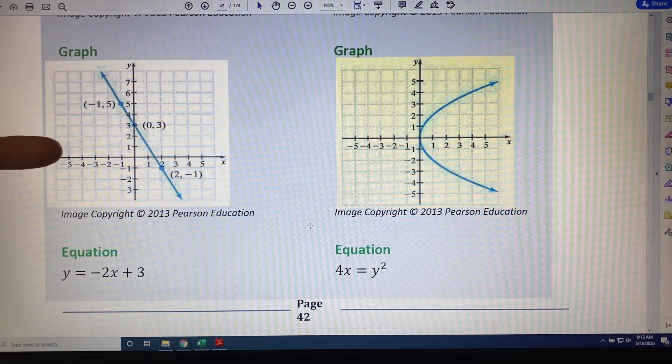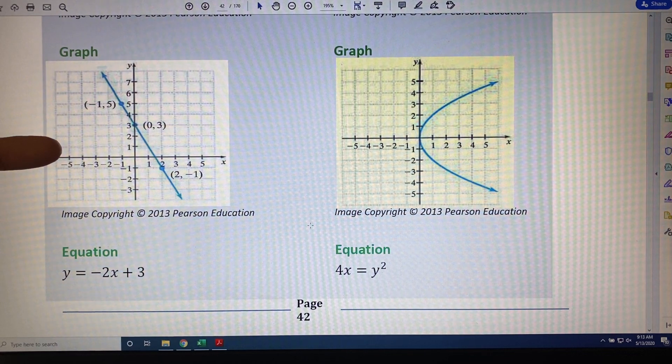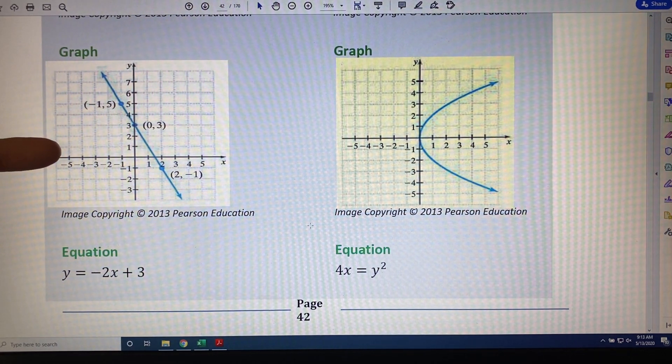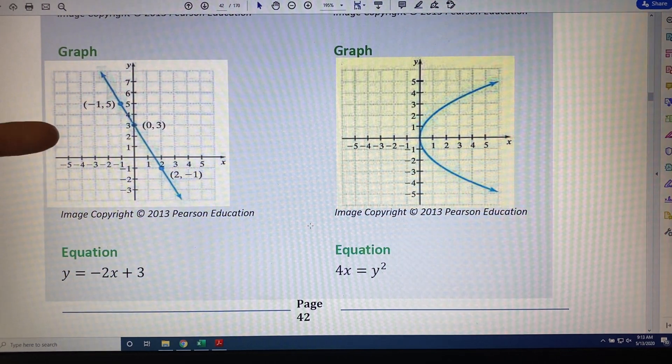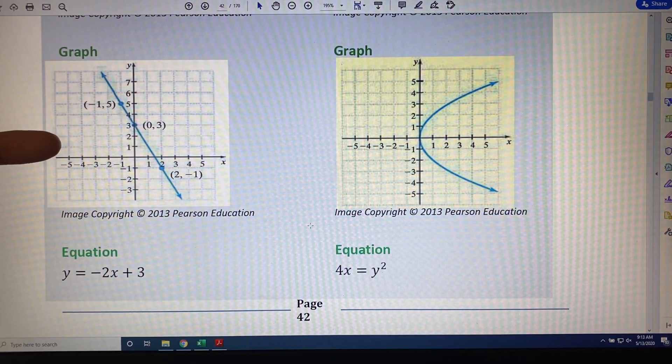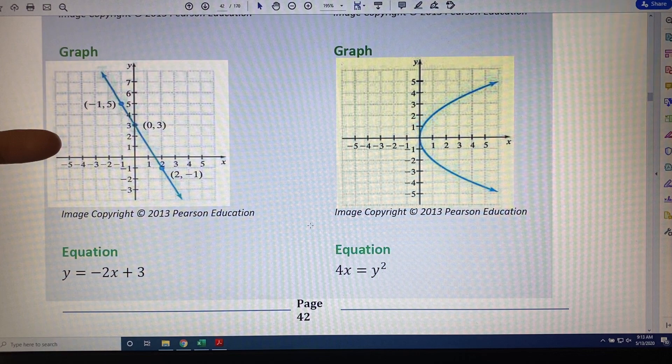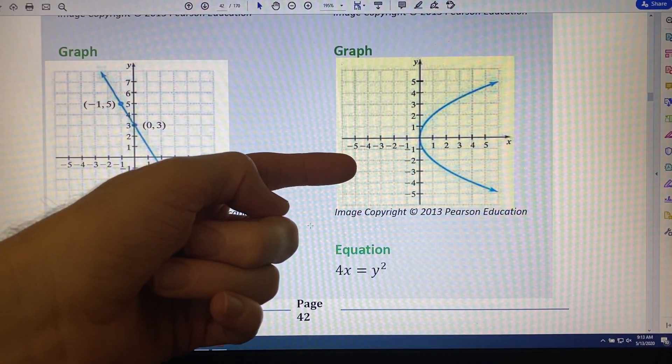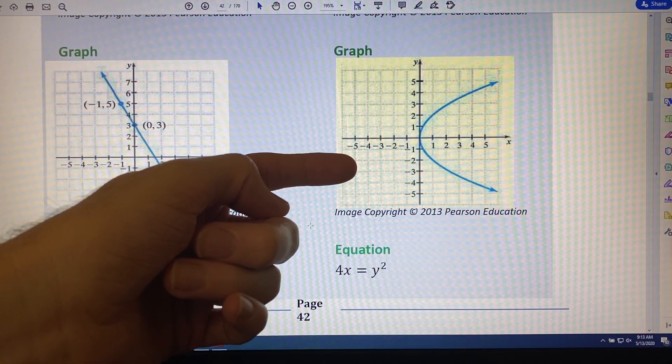Now, as to whether this is a function or not, there's a skill that I need to teach you called the vertical line test, which will be later on in this chapter. So, for now, I'm simply going to say that this line is a function because it passes the vertical line test, and this curve over here is not because it fails the vertical line test.